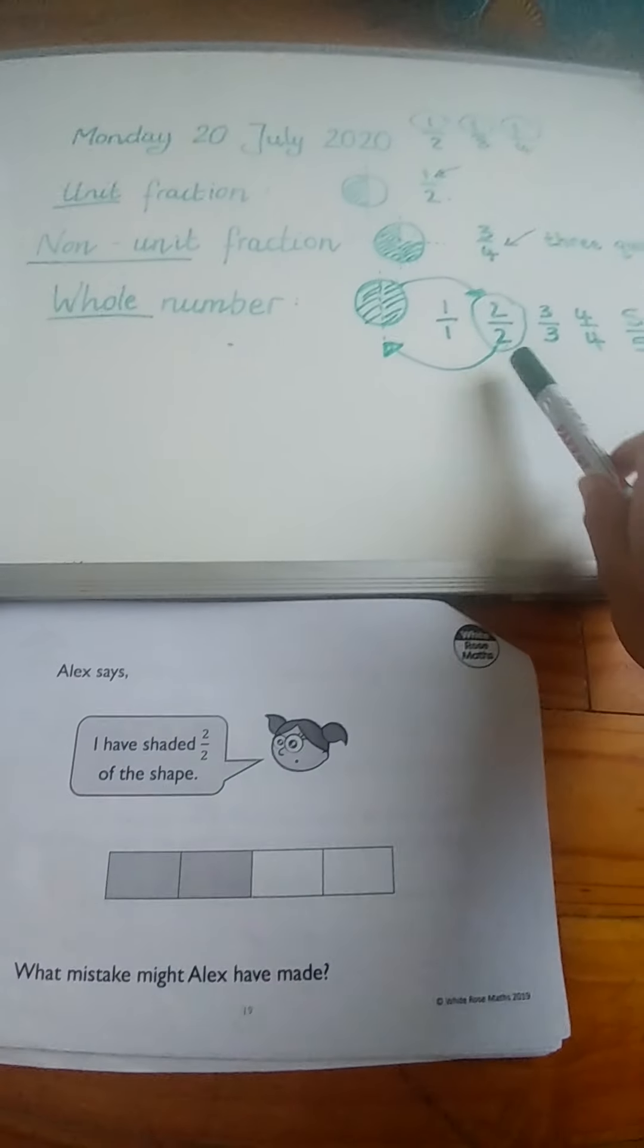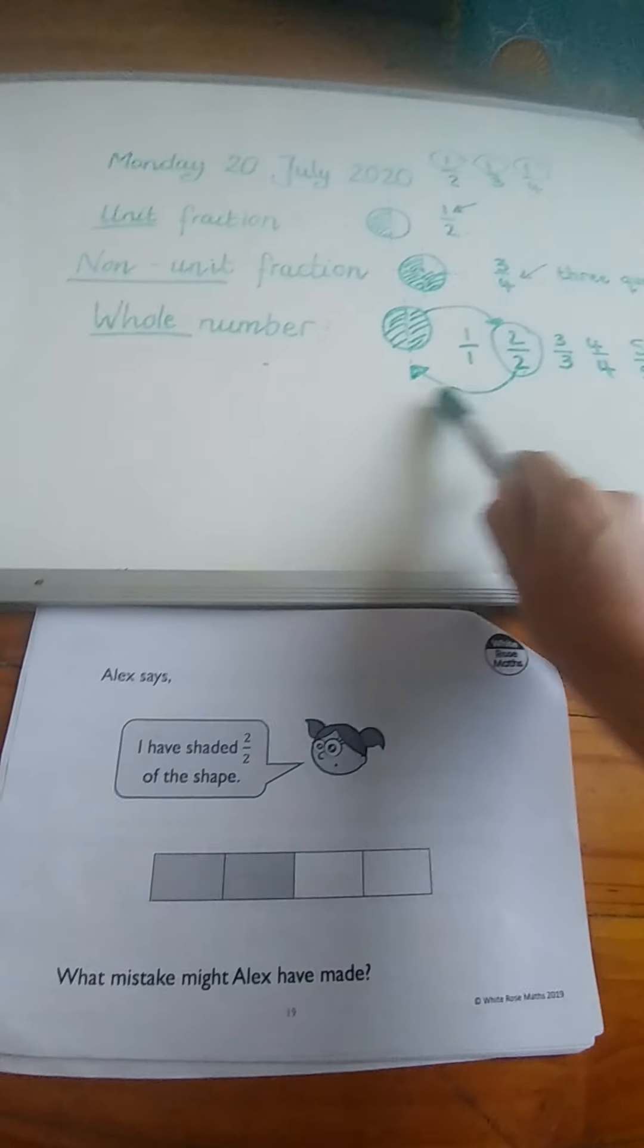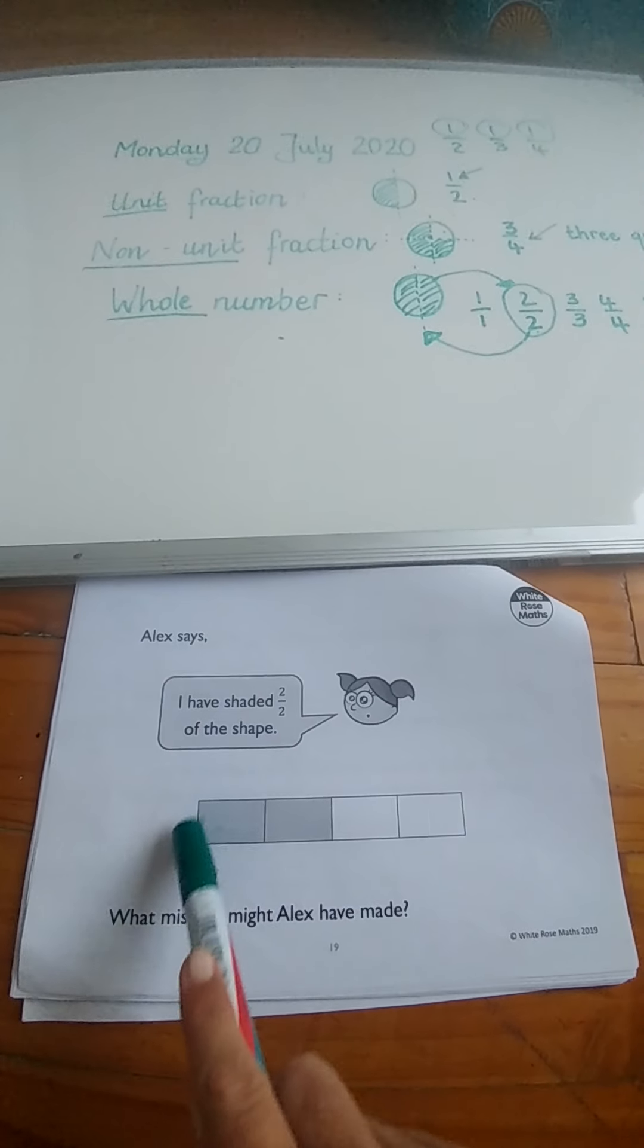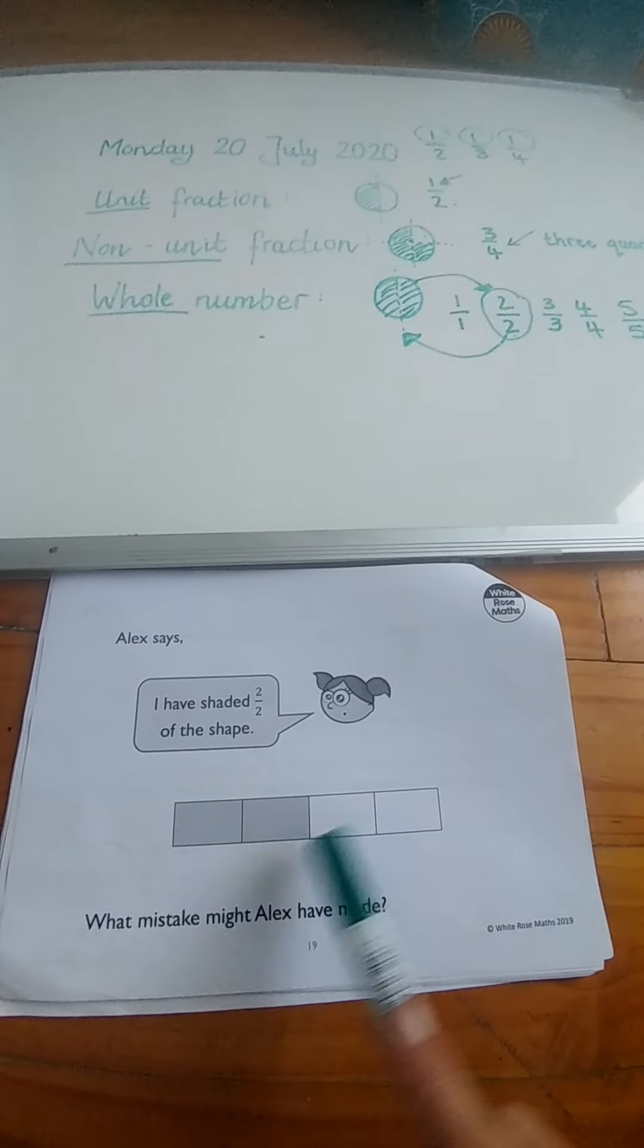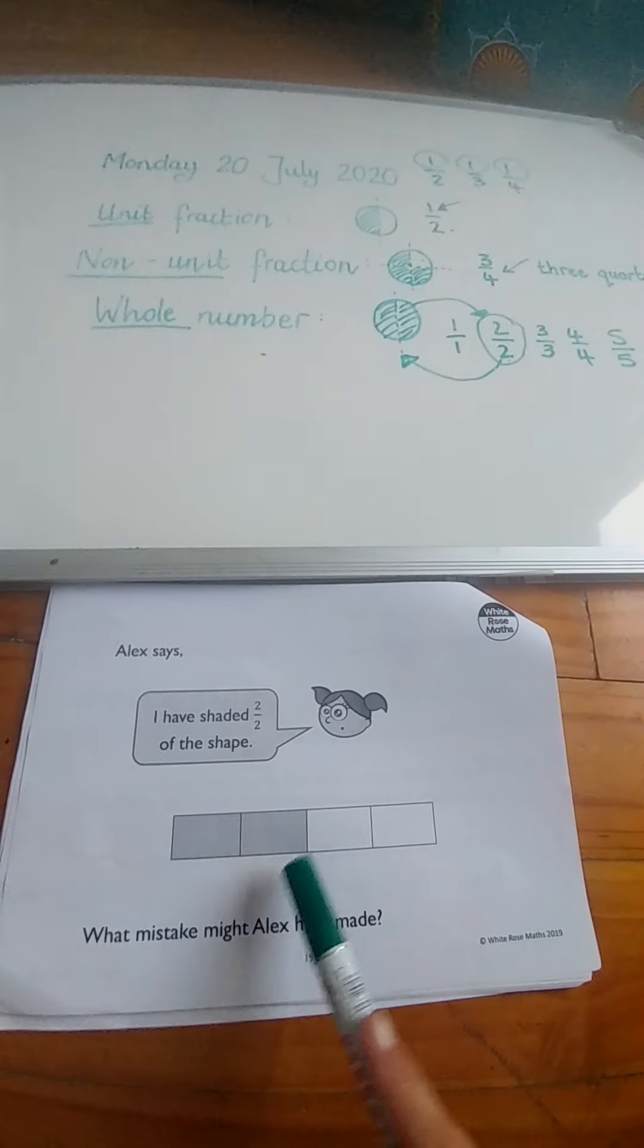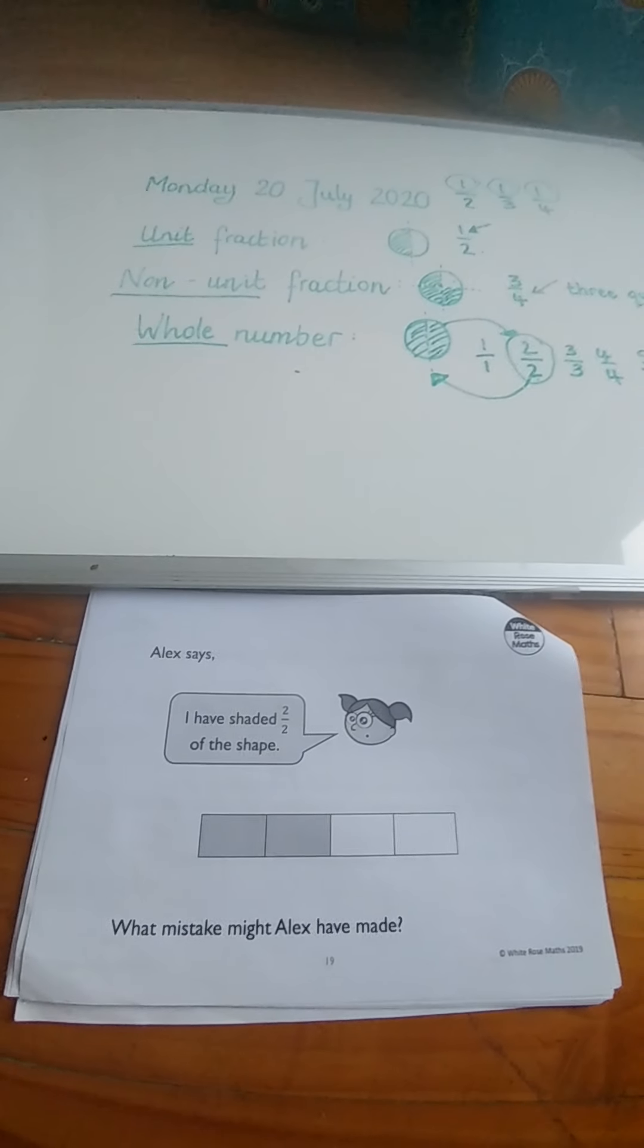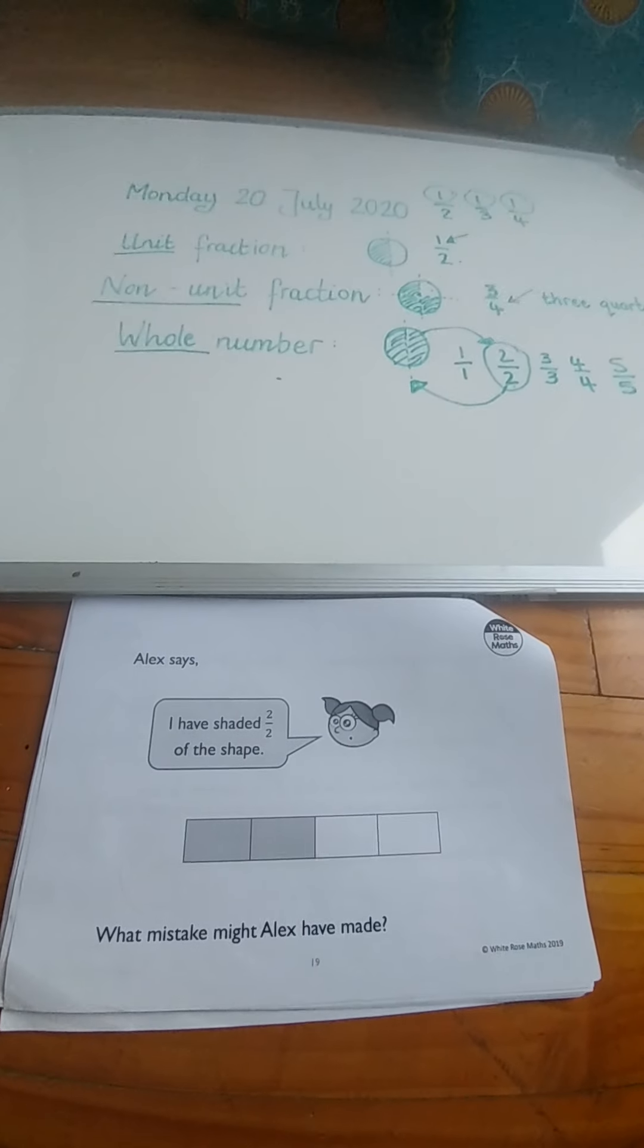We have two-twos here, you see there. And two-twos was a whole number. Has Alex shaded in the whole thing? It doesn't seem to. She seems to have only shaded in half of it. If we divide it in half, how many pieces in total can you tell me? A half or two of how many pieces?